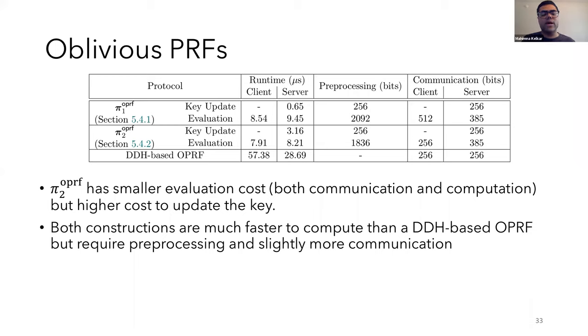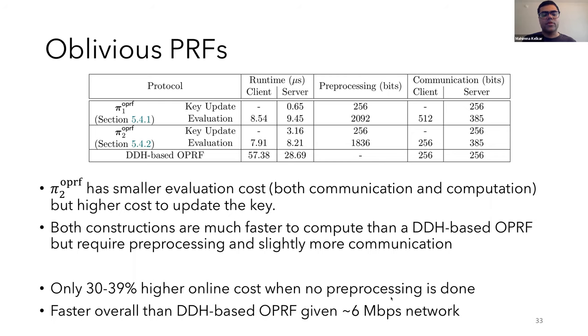Our protocol is also two to three times better than the OPRF protocol from Boneh et al. for the same two-three-week PRF. And from the table, you can see for communication, our protocols require 897 and 641 bits respectively, compared to 512 for the DDH-based. So the communication cost is only slightly higher. And even if no preprocessing is allowed, our online cost is only about 30 to 39% higher, depending upon how frequently the key needs to be changed. So further, if we attempt to compare using communication and computation together at the same time, given a 6 MBPS network, our first protocol will be overall faster than the DDH-based OPRF. And for the second protocol, this happens with a 2 MBPS network, which should be very reasonable in practice.